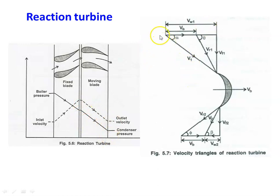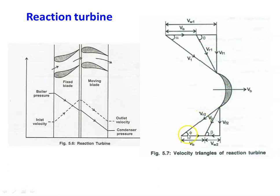The steam enters the moving blade with absolute velocity V1 at angle alpha (the fixed blade angle). The blade velocity is Vb, and the vectorial sum of Vb and V1 gives Vr1, the relative velocity at inlet, with theta as the moving blade inlet angle. The absolute velocity has a vertical flow component Vf1 and horizontal whirl component Vw1. Steam leaves with relative velocity Vr2 at outlet angle phi, giving absolute velocity V2 with flow component Vf2 and whirl component Vw2.